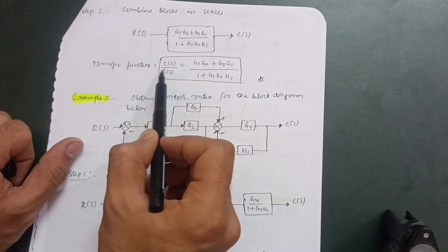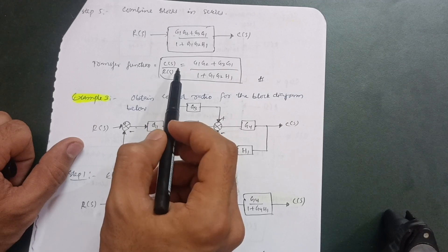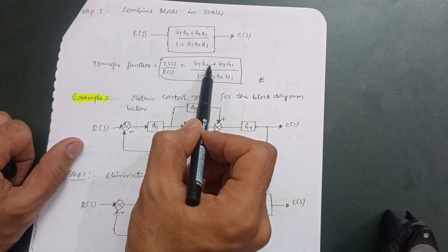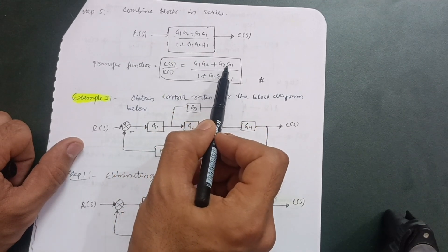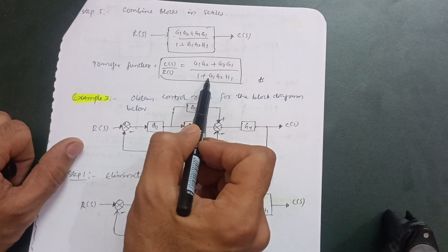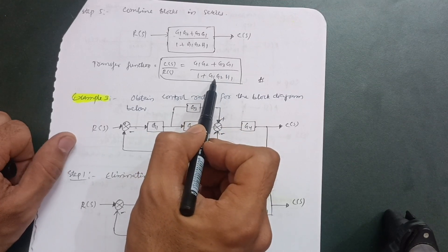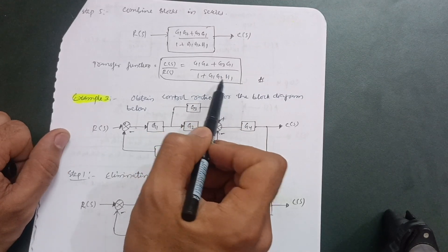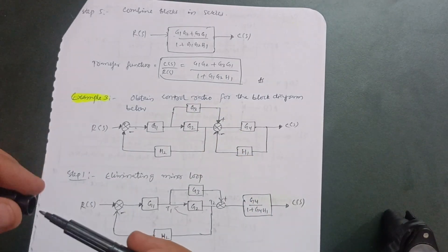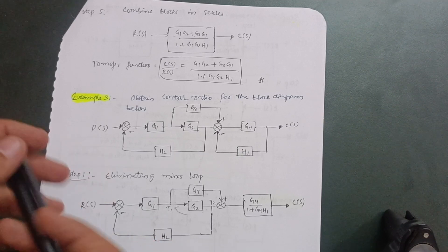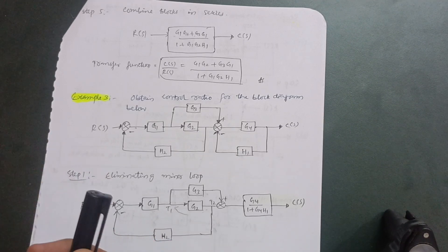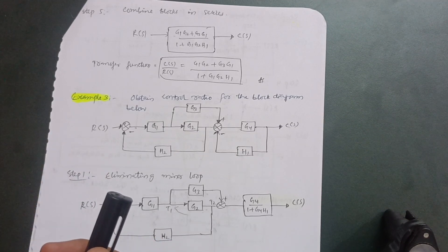Therefore, the transfer function C(s)/R(s) equals (G1·G2 + G1·G3) / (1 + G1·G2·H1). This is the complete transfer function for this problem. In the next lecture, we will solve another problem. Thank you.